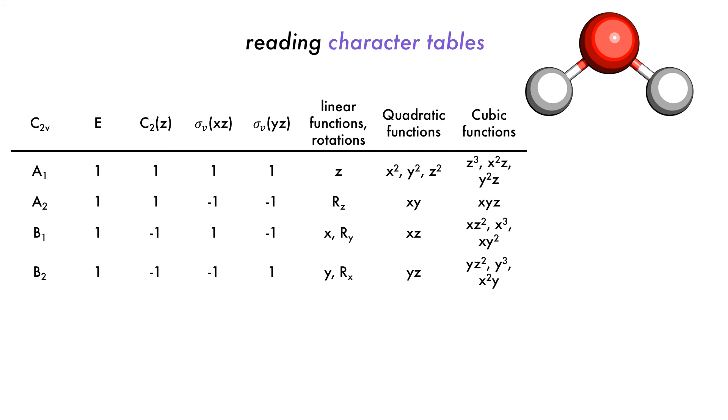Once we have assigned a point group, we can look up the widely available point group tables, such as this one, for the C2V water molecule. Character tables are based on matrices and group theory, but here we are predominantly interested in understanding how to use character tables.